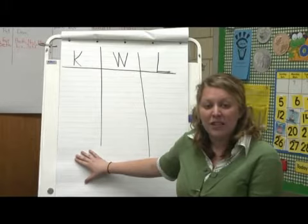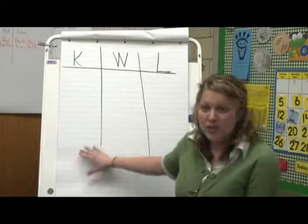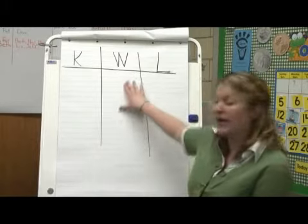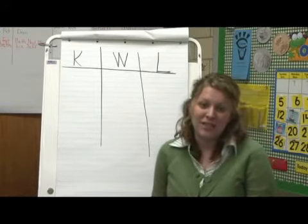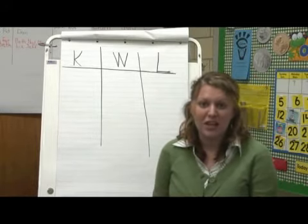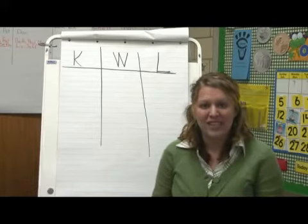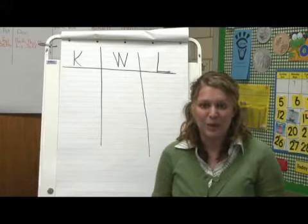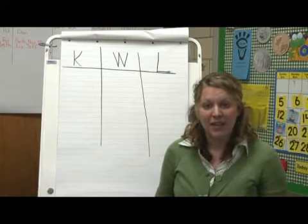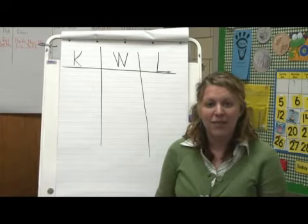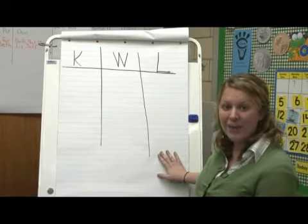Next, you would ask the children what they would like to know about fruit and write their responses in the middle column. You'll then take time to present the new material — read a number of story books, bring in the hands-on materials, let the kiddos explore and play. When that time is done, come back and have them think about what they've actually learned, which you'll fill in the last column.